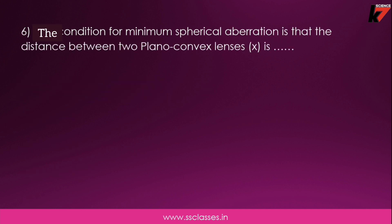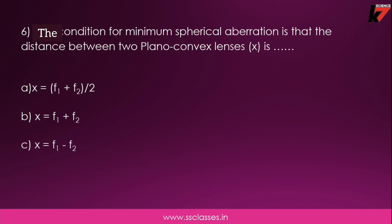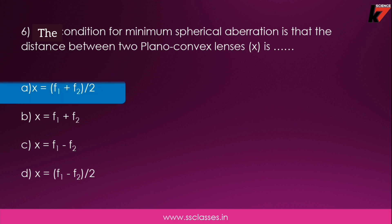Sixth question — an important one: the condition for minimum spherical aberration is that the distance x between two plano-convex lenses satisfies which expression? Options are: x equals f1 plus f2 upon 2, or f1 plus f2, or f1 minus f2, or f1 minus f2 upon 2. The correct answer is option C: x equals f1 minus f2.